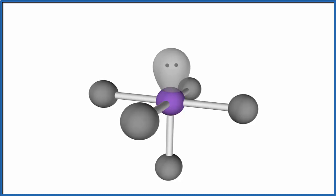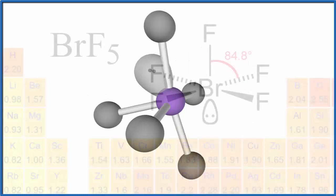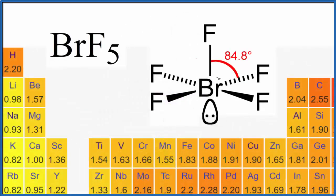...negative, that means we'll have a more negative side here and then on the top it'll be more positive. So BrF5 is a polar molecule. Back to our Lewis structure. To recap, we said these bonds between the...